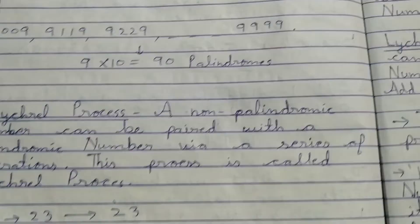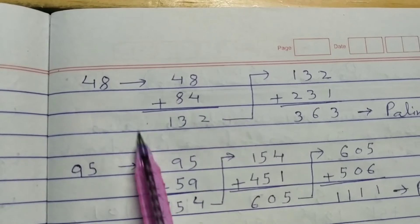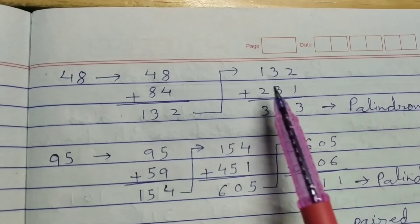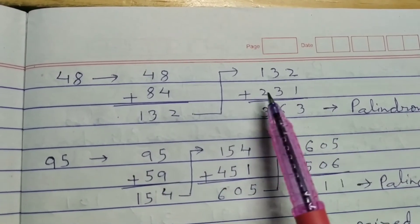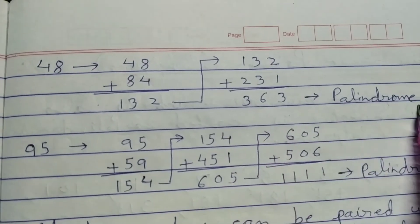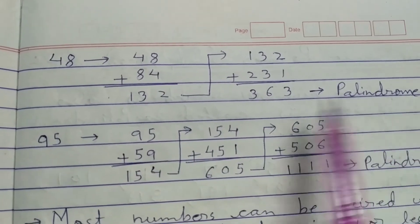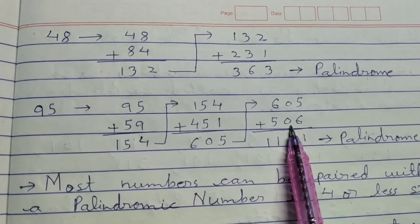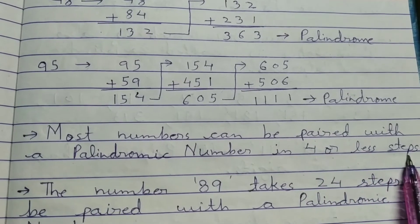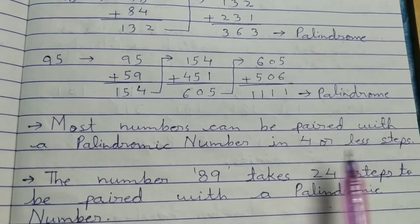Sometimes it may take more than one step. For example, 48: reverse to get 84, and 48 + 84 = 132, which is not a palindrome. Repeat the process: reverse 132 to get 231, and 132 + 231 = 363, which is a palindrome. So 48 reached a palindrome in two steps. For 95, it takes three steps. Most numbers can be paired with a palindrome in four or fewer steps, but some may take a very large number of steps — for example, 89 takes 24 steps.